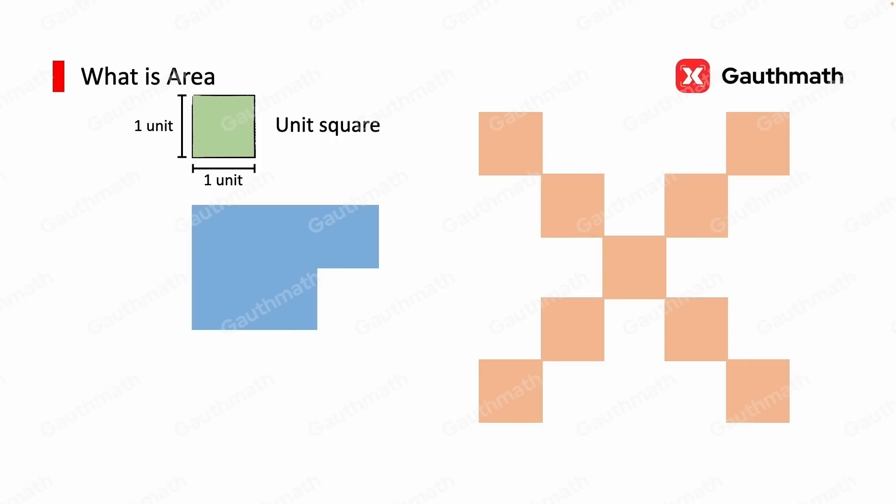The next step is to find out how many unit squares these figures have respectively. 1, 2, 3, 4, 5. It's clear that the left figure has 5 units of area.